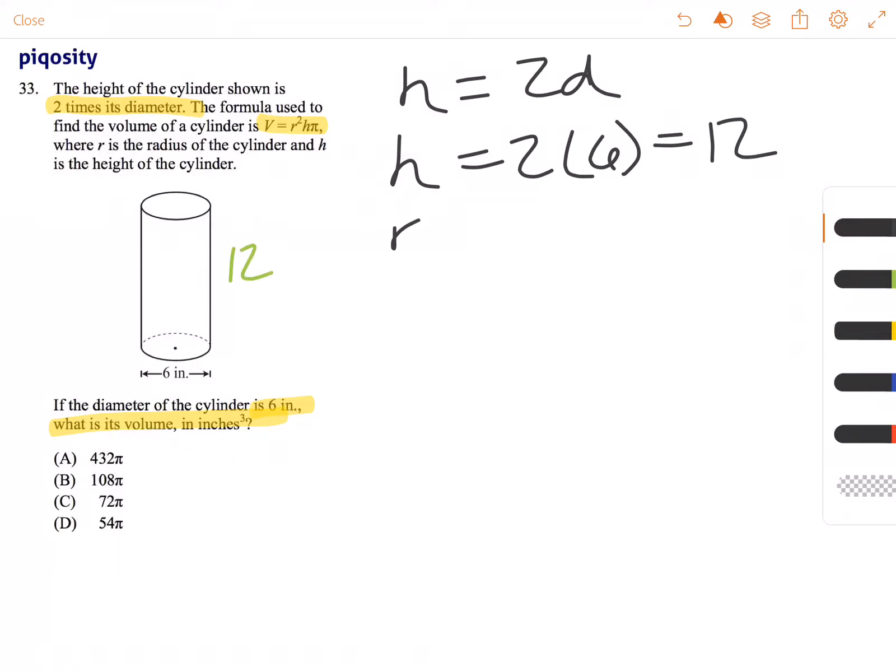Now the radius of a circle is its diameter divided by 2. So 6 divided by 2 equals 3.